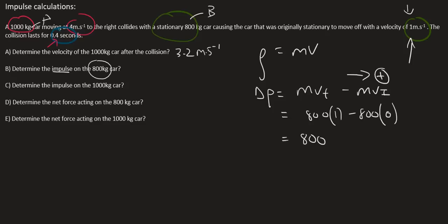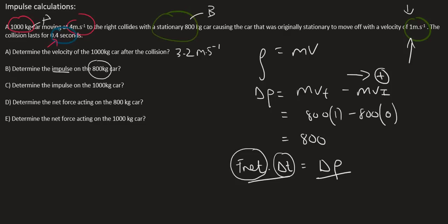What are the units of impulse? Because the two expressions are equivalent, you can use either unit. F is Newtons and time is seconds, so you could say N·s — notice there's no negative 1 exponent because time is not in the denominator. Or you could use momentum units, which is kg·m·s⁻¹. The direction will be to the right, because we chose right as positive and we got a positive answer.